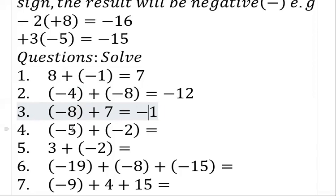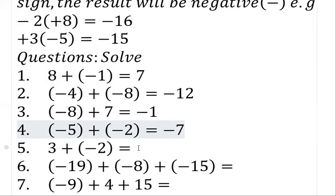If you are adding numbers of the same sign, just add them and take the sign. Five plus two gives seven, and they're having the same sign so take their sign, which is plus. For the next one: adding numbers of different signs — plus and minus — just subtract them and take the sign of the largest number. Three minus two gives one, and the sign of the largest number is plus.